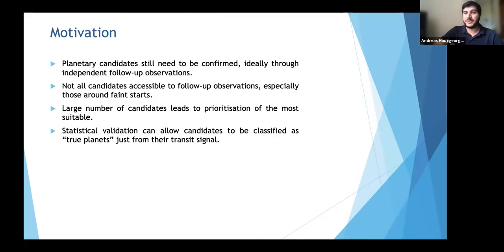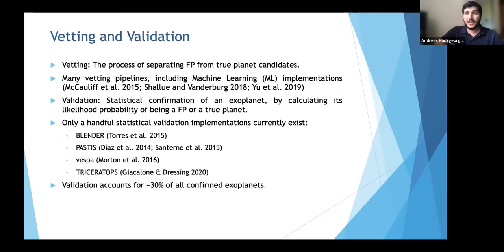Planetary candidates will still need confirmation through follow-up observations, but not all will be accessible — especially those around faint stars — and the large number of candidates will require prioritization. Statistical validation could allow candidates with strong transit signal evidence to be classified as true planets without follow-up. I'll introduce the concept of vetting and validation. Vetting refers to separating false positives from true planet candidates, done either manually or automatically. Many vetting pipelines have been developed, especially for Kepler, some using machine learning.